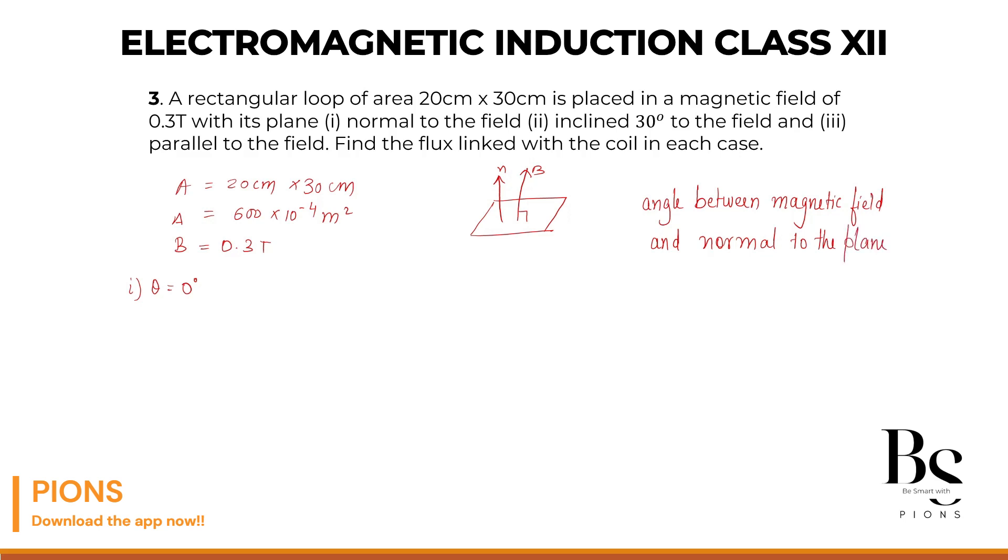So when you take this angle, theta area is zero in the first case. Theta is not 90. Be very careful. So what will be the flux? Flux phi will be equals to. Because the question is saying, find the flux linked with the coil in each case. So phi will be B A cos of angle theta.